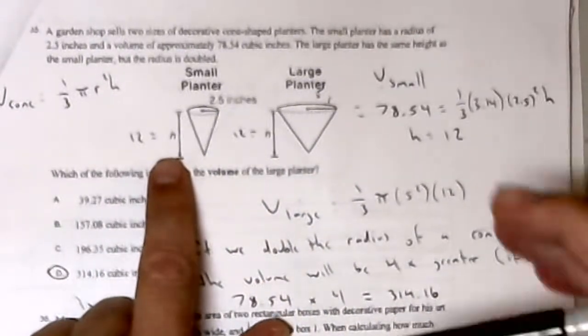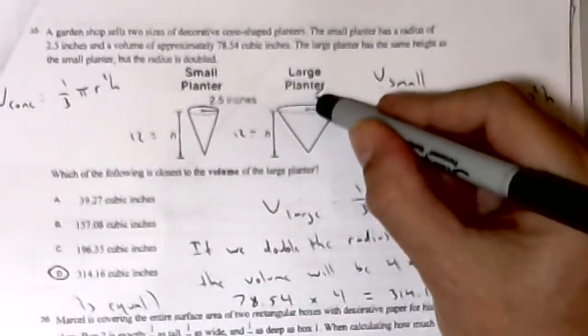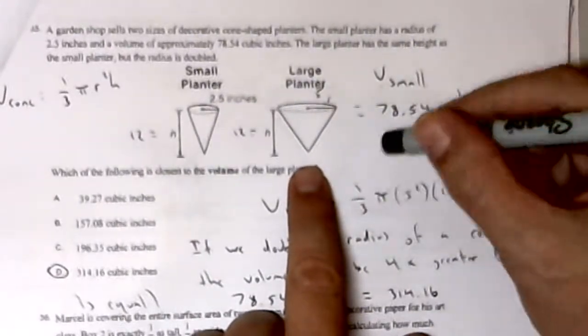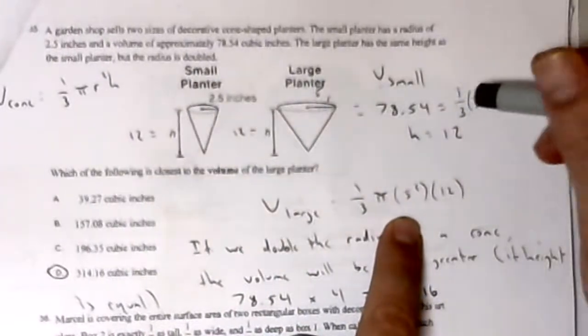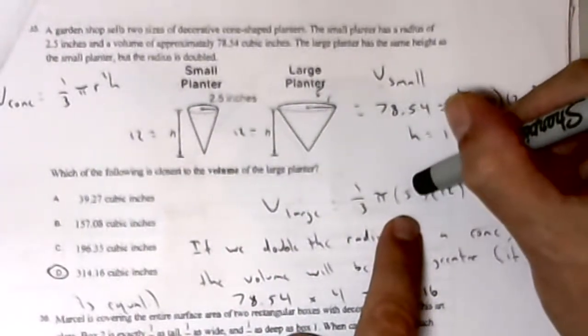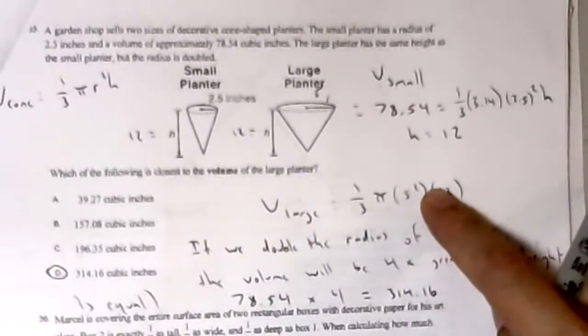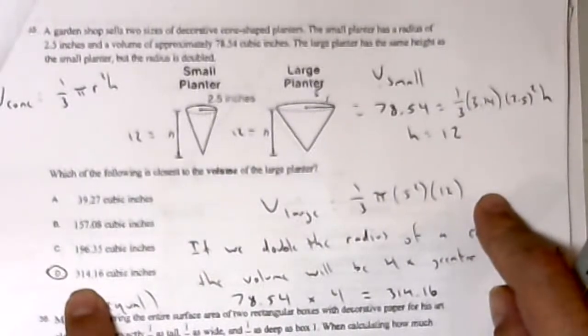The large planter has the same height, so there's a height of 12, but the radius is doubled. The radius is 5. What is the volume of the large planter? One-third pi, now I use 5 for R, 5 squared, H is 12. 12 over 3 is 4, that's 100 pi, which is 314.16.